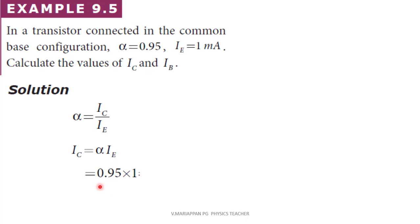Alpha is equal to 0.95, IE is equal to 1 milliampere. We will substitute the values. So IC is equal to 0.95 times 1, which gives IC equal to 0.95 milliampere.